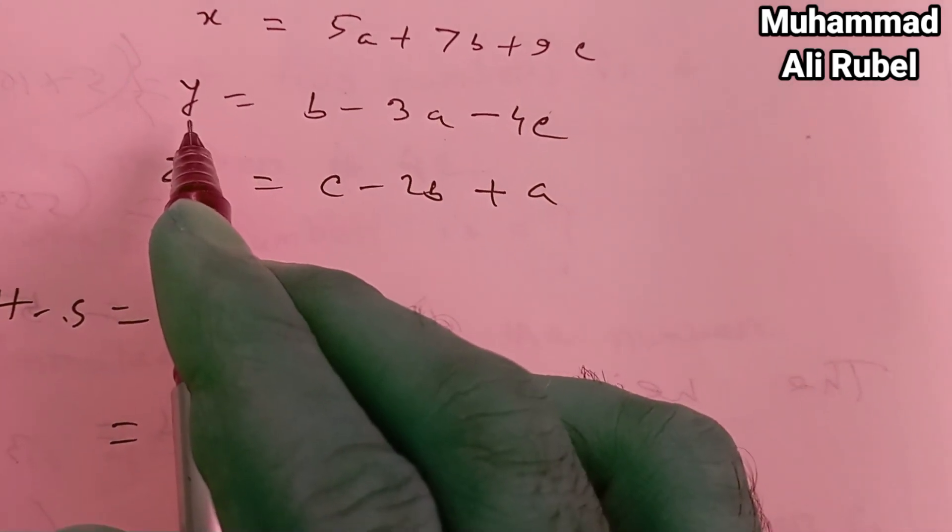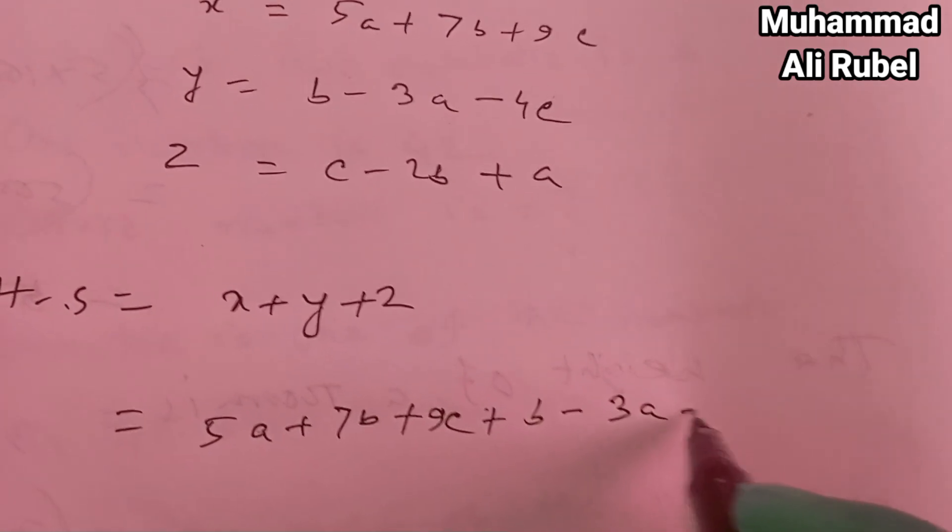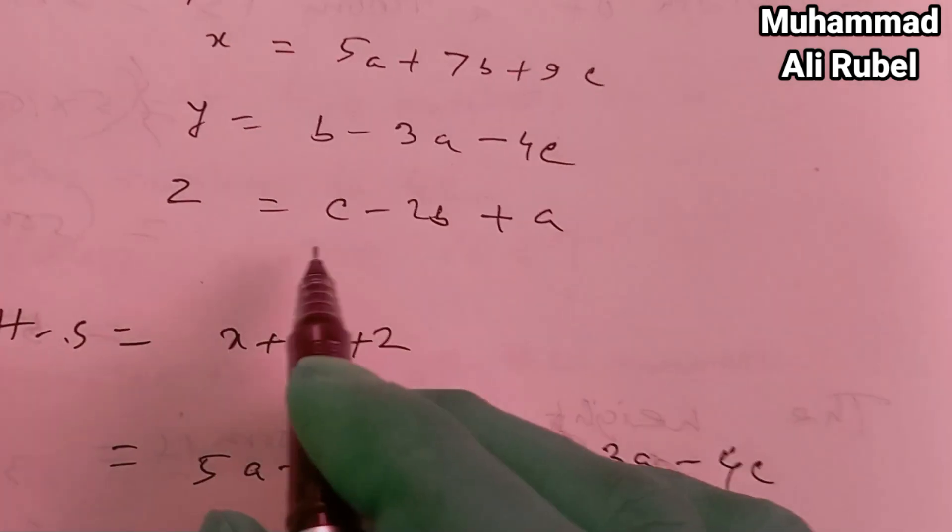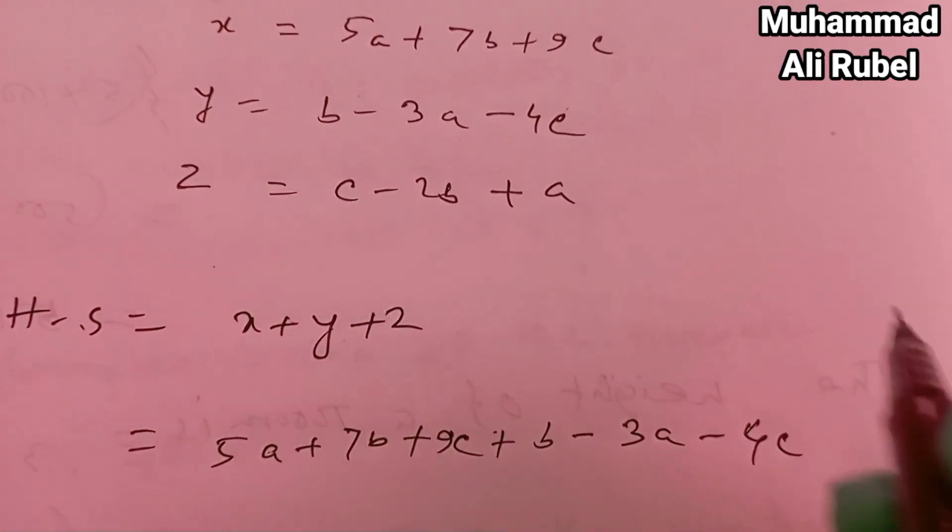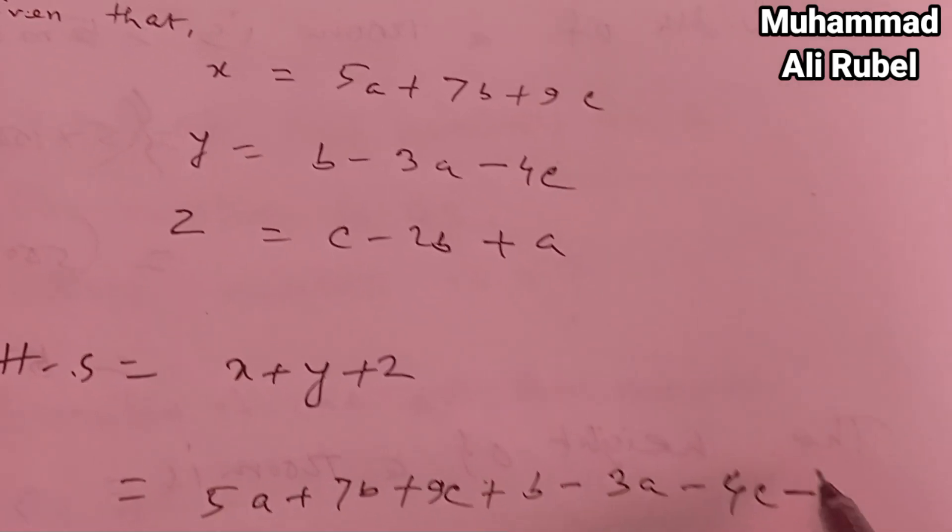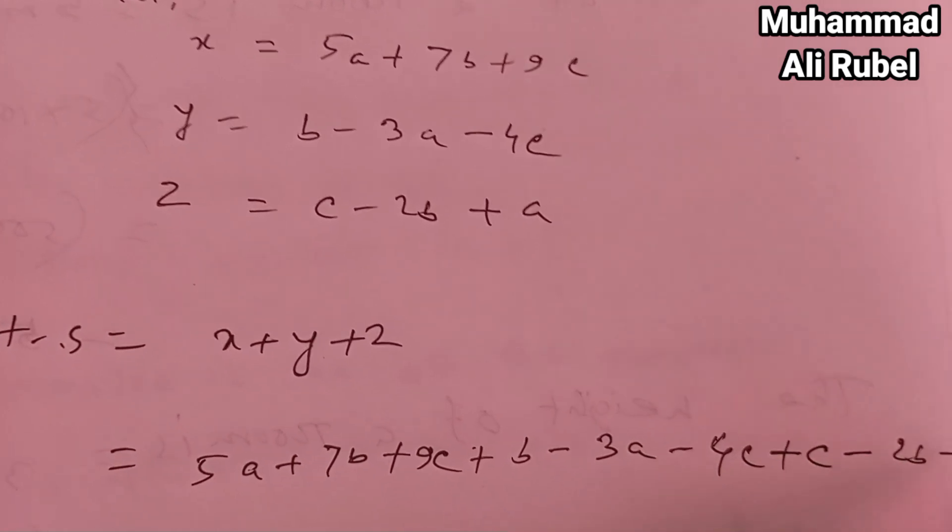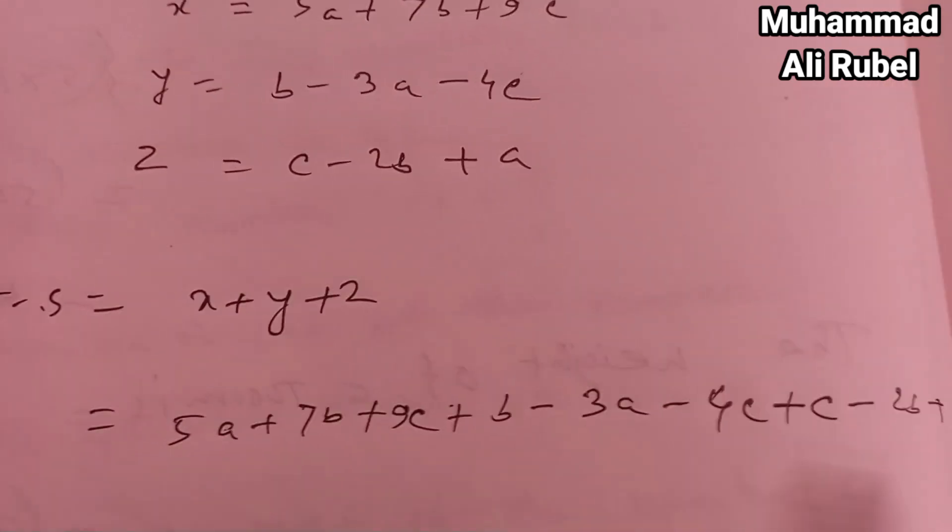Then the value of y, b minus 3a minus 4c. Then put in the value of z, c minus 2b plus a.